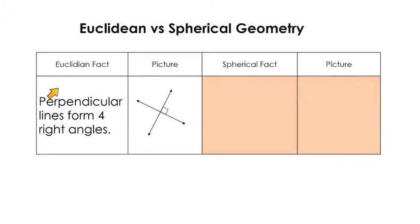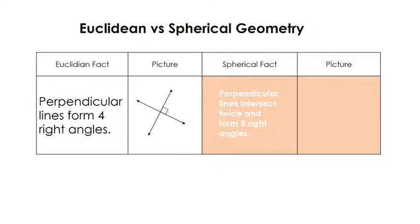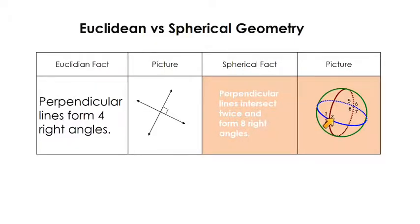Next: in Euclidean geometry, perpendicular lines form four right angles. In spherical geometry, perpendicular lines intersect twice and form eight right angles. So angles one through four are right angles at the first intersection, and then on the back side of the circle, angles five, six, seven, and eight are also right angles. In spherical geometry, perpendicular lines intersect to make eight right angles.